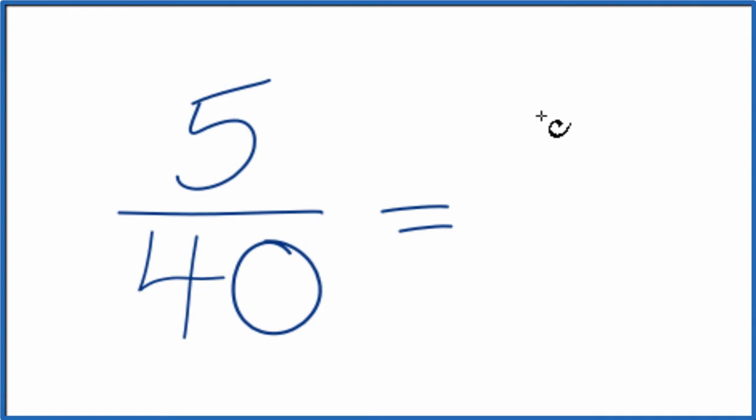5 divided by 5, that's just 1. 40 divided by 5 is 8, because 8 times 5 is 40.